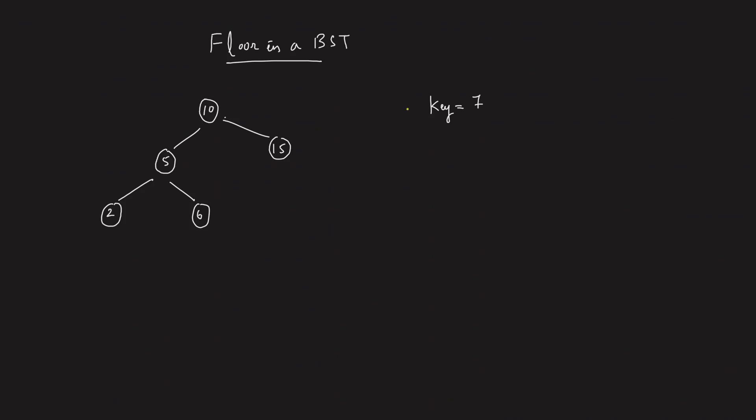Hey everyone, welcome back to the channel. I hope you guys are doing extremely well. So today we will be solving the problem, floor in a binary search tree. What does this signify? Basically, you'll be given a key. Assume the key is given as 7.